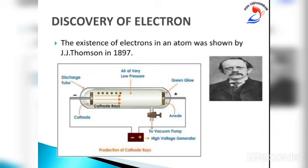The existence of electrons in an atom was shown by J.J. Thomson in 1897. Thomson passed electricity at high voltage through a gas at very low pressure taken in a discharge tube. The gas consists of atoms, and all atoms contain electrons. When high electrical voltage is applied, the electrical energy pushes out some electrons from the atoms of the gas. These fast-moving electrons form cathode rays. Thus the formation of cathode rays shows that one of the subatomic particles present in all atoms is the negatively charged electron.